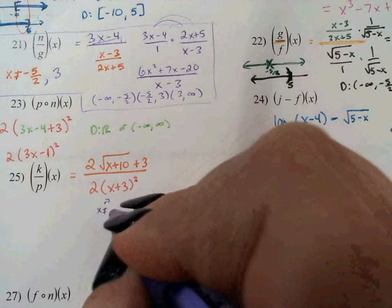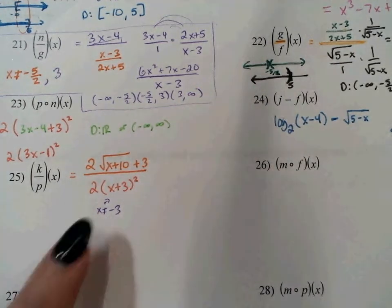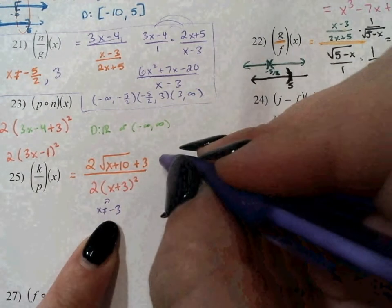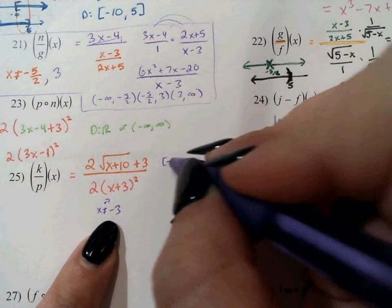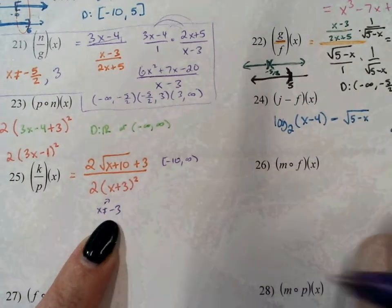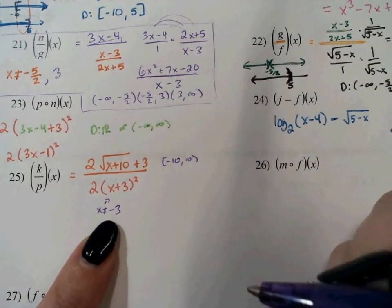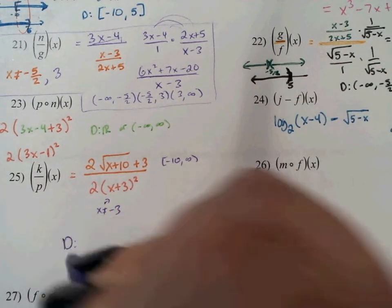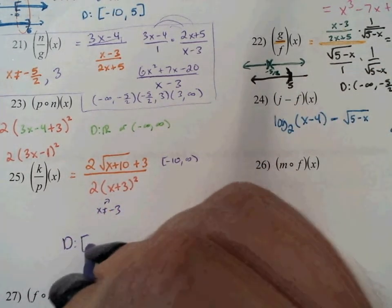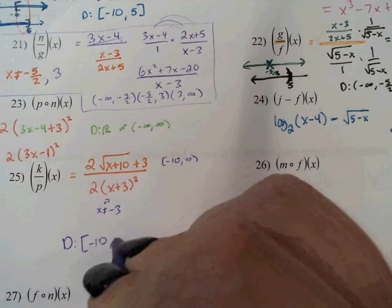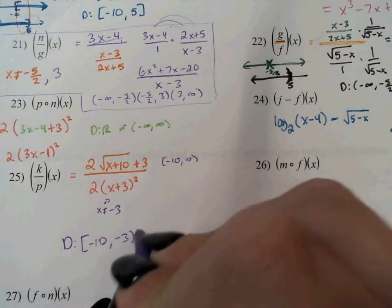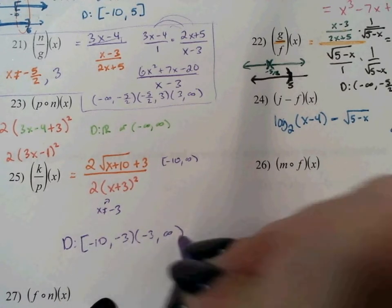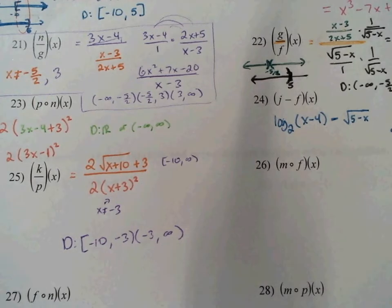Now x cannot equal negative 3. So since k only exists from negative 10 to infinity, and x cannot equal negative 3, my domain is going to be negative 10 to negative 3, leaving negative 3 out, and then negative 3 to infinity.